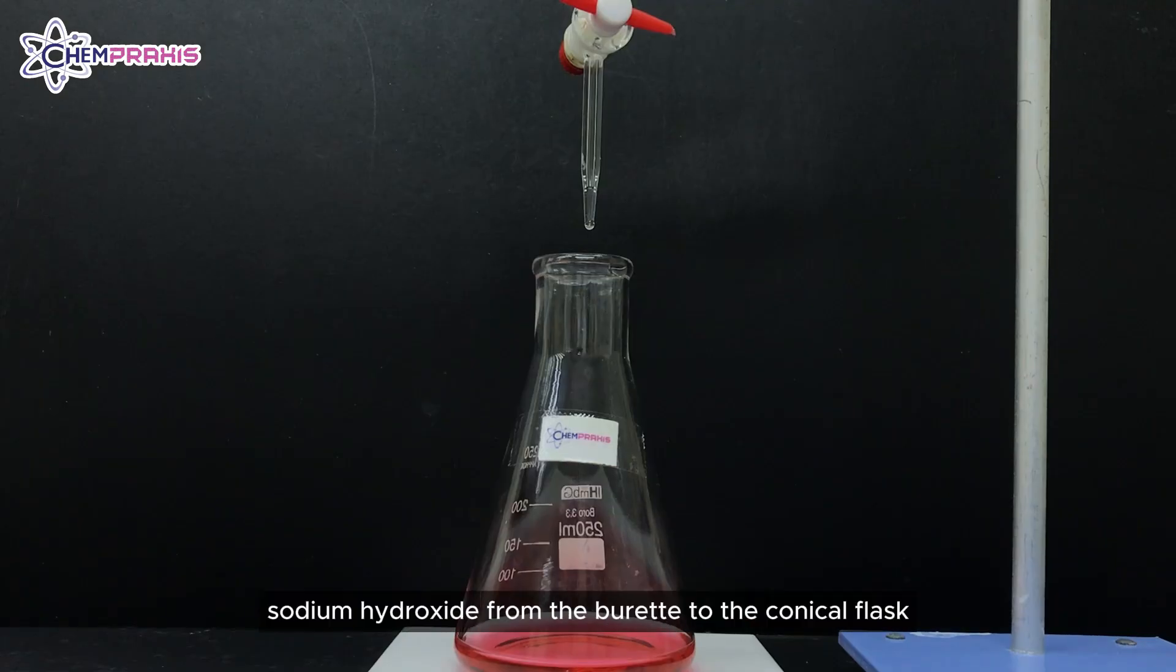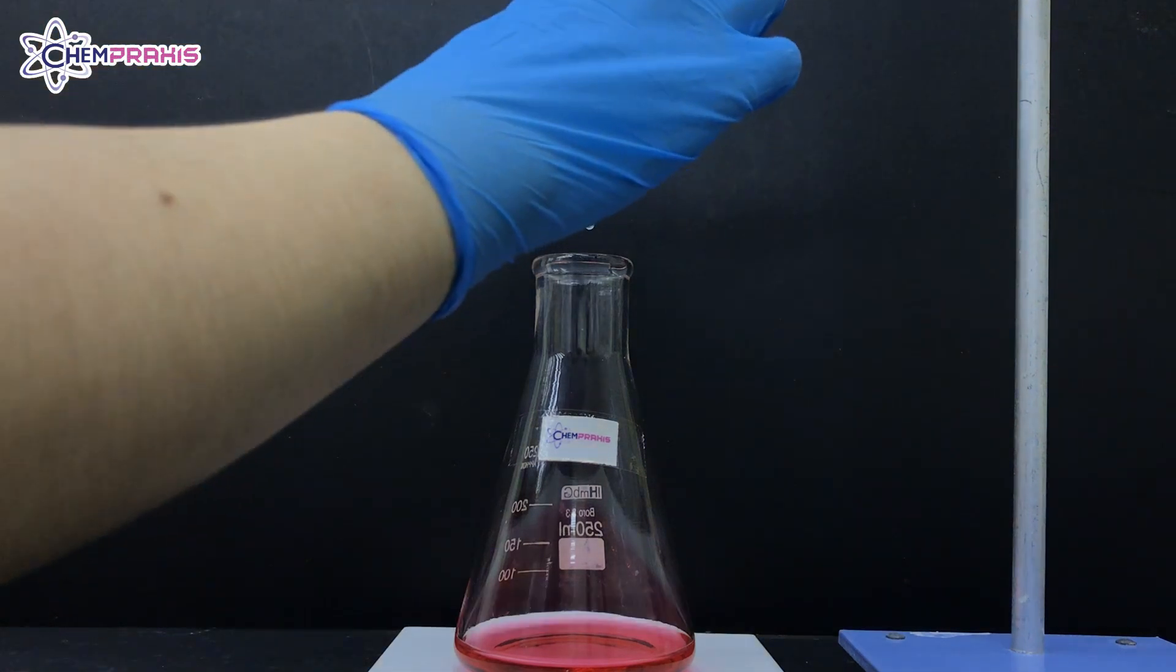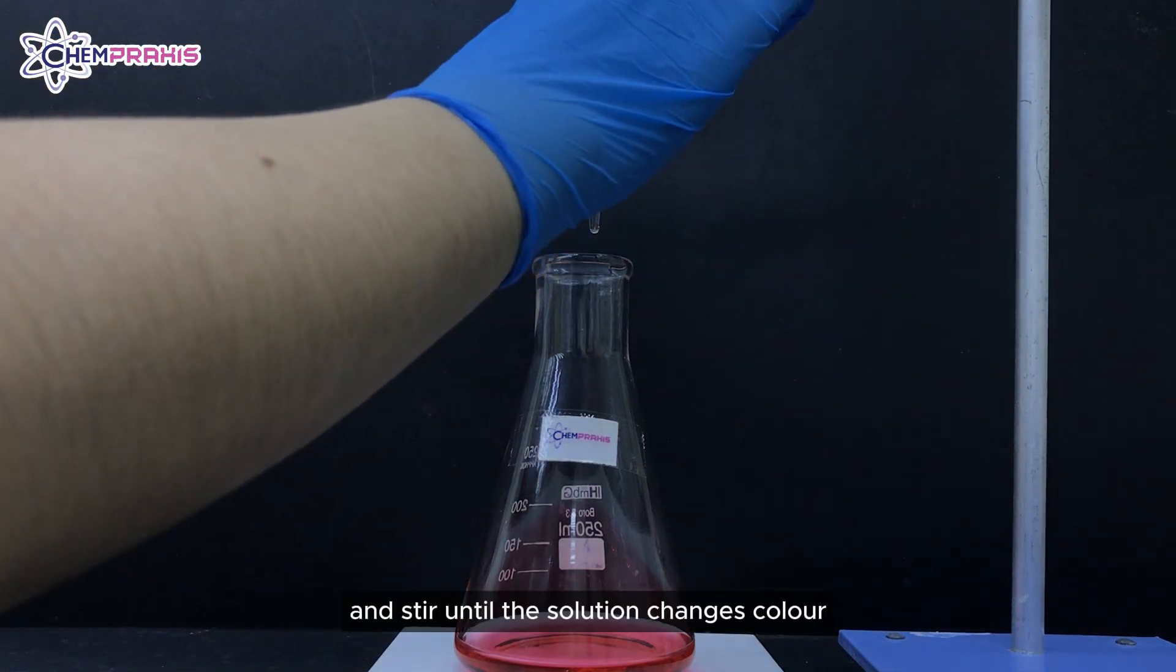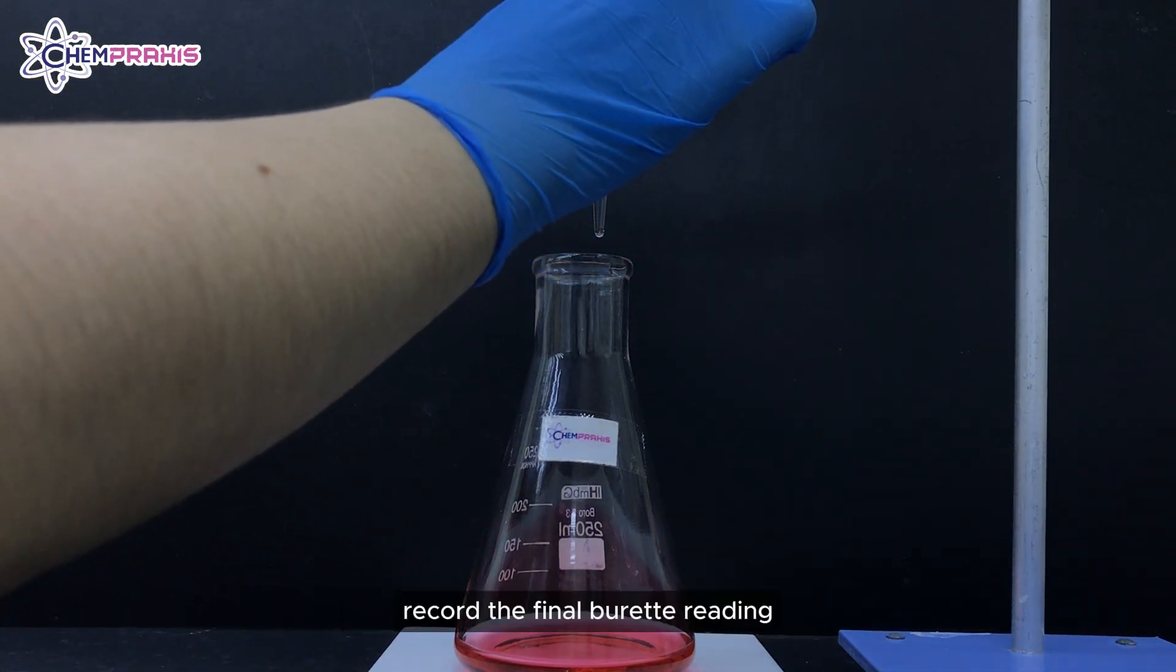Add the aqueous sodium hydroxide from the burette to the conical flask and stir it until the solution changes colour. Record the final burette reading.